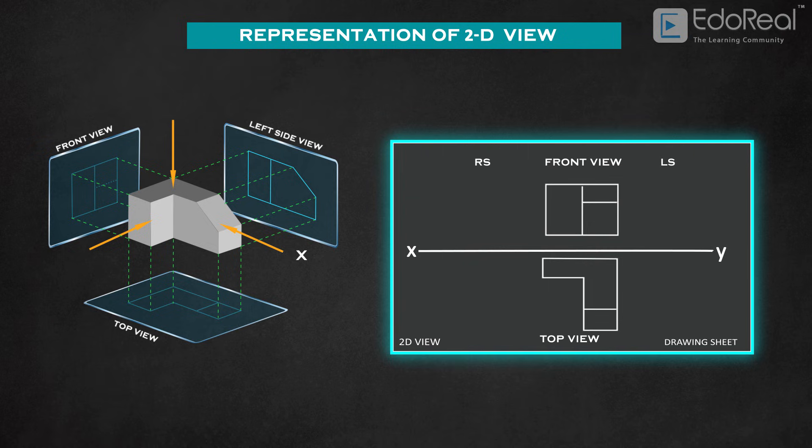And the side view is drawn beside the front view. If we project the left side view of the object, it will be projected right side of front view. So we draw it right side to front view on the paper.